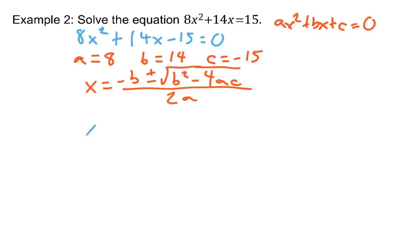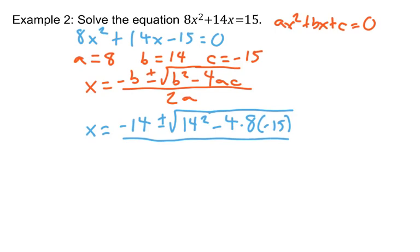Plugging in, negative B would be negative 14 plus or minus the square root of, principal square root of 14 squared minus 4 times A is 8, C is negative 15. Watch the negative sign super carefully here. And in the denominator, the A is 8.